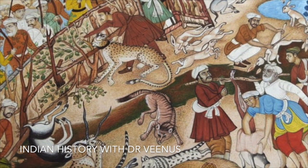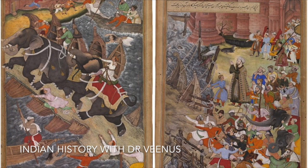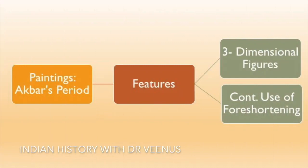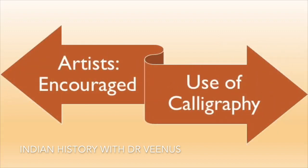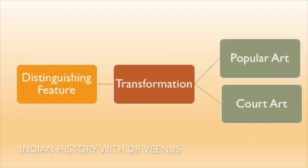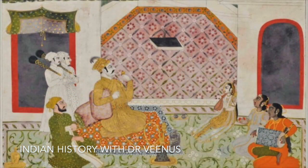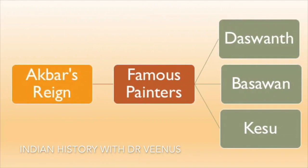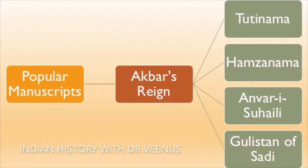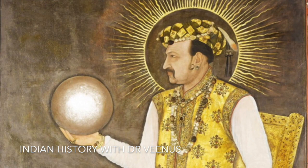Defining features of Akbar's period include the use of three-dimensional figures, continued use of foreshortening, and calligraphy in paintings. A distinguishing feature was the transformation of popular art to court art, focusing on scenes of court life. Famous painters of this period include Dashvant, Basavan and Kesu. Prominent illustrated manuscripts include Tuti Nama, Hamza Nama, Anwar-e-Suheli and Gulistan of Saadi. Mughal paintings reached their zenith in the period of Jahangir, who was a naturalist preferring flora and fauna — birds, animals, trees and flowers.